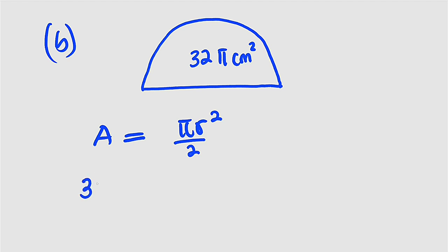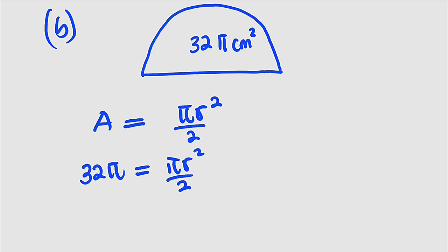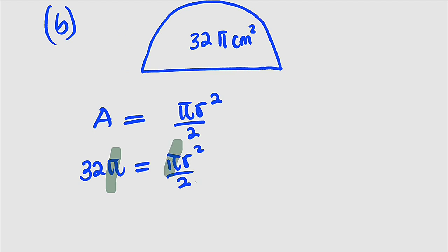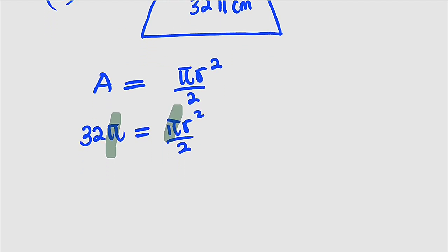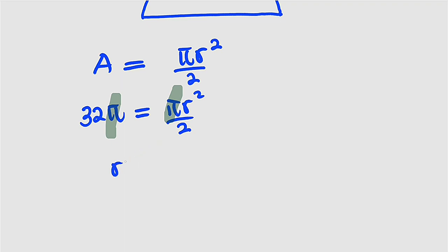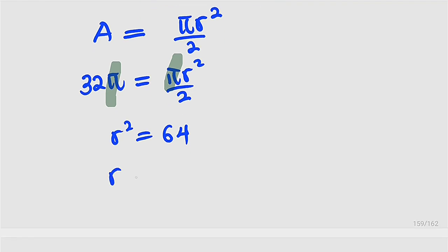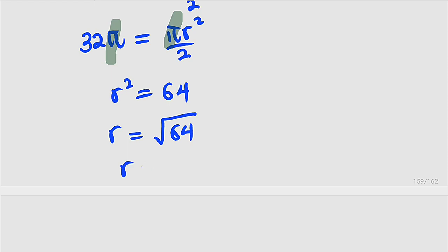The area is given as 32π, so 32π equals πr squared divided by 2. We cancel π from both sides and multiply both sides by 2, giving 32 times 2 equals 64, therefore r squared equals 64. Taking the square root of both sides — we don't add plus or minus because this is a length and all lengths are positive — the square root of 64 is 8. Hence the radius of the circle is 8 centimeters.